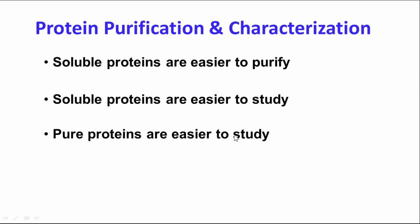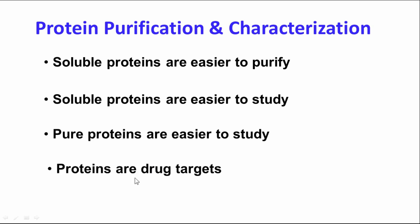Pure proteins are easier to study. You can get a lot more really good data from pure proteins — you can't do clean work with dirty proteins. So it's good to have a pure protein to make sure you don't have any interfering activity or interfering protein. When you measure a function of an enzyme, for example, that protein is all that enzyme and not another one that might be contaminating it.